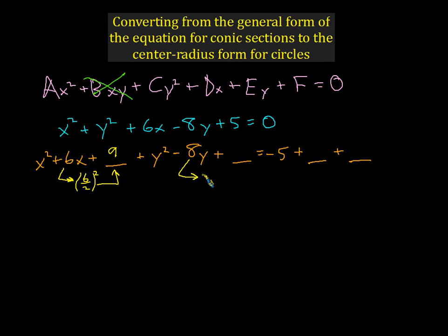And then we do the same thing here. We divide this 8 by 2. And if you want, you can make a negative 8. Doesn't matter because we're about to square it. And that gets us 8 divided by 2, 4 squared is 16. So we'll fill in the blanks here with 9 and 16.